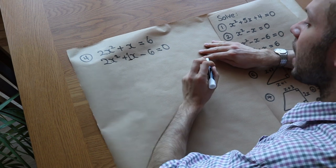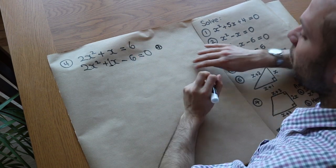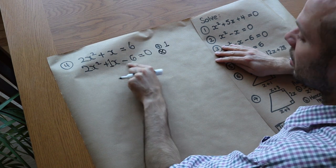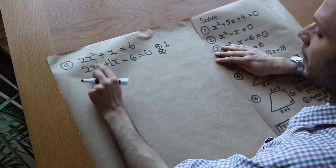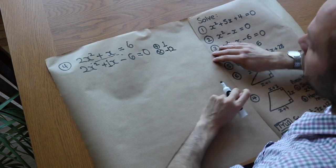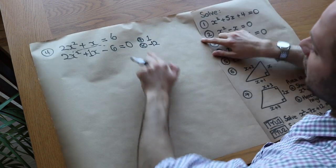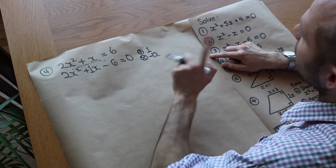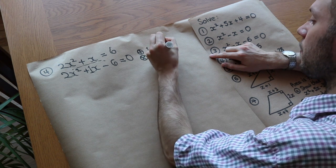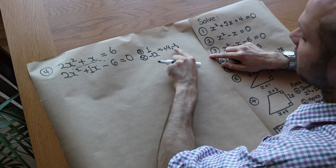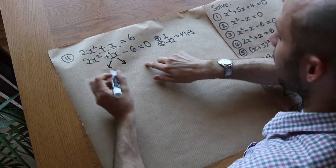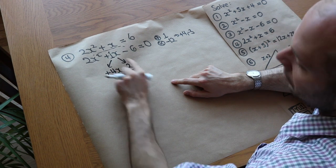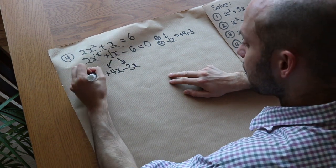As a reminder of that method: we need two numbers which add to give the middle number, but rather than just the last number, we multiply the first coefficient by the last — so first times last is minus twelve. What two numbers multiply to give minus twelve and add to give one? Well three and four multiply to give twelve, and we could have plus four and minus three — they multiply to give minus twelve and add to give one. So we split the middle term: two x squared plus four x minus three x minus six equals zero, and four x minus three x is indeed one x.